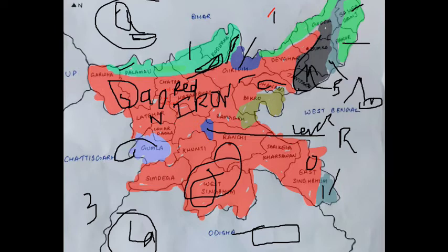Sandy soil is found in the Damodar valley region and East Hazaribagh and Dhanbad. The Damodar valley region is made up of Gondwana rocks, which have a dominance of sandy rocks. Gondwana rock decomposition forms sandy soil.